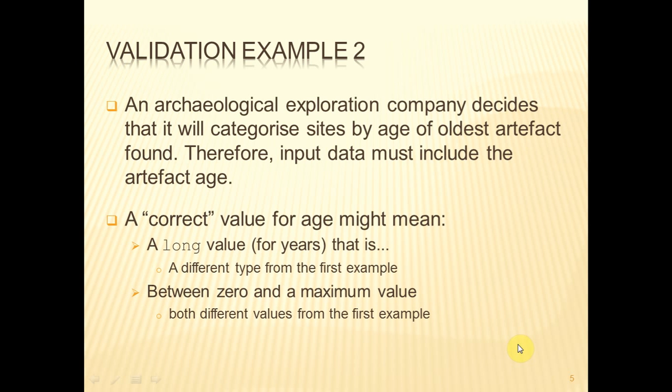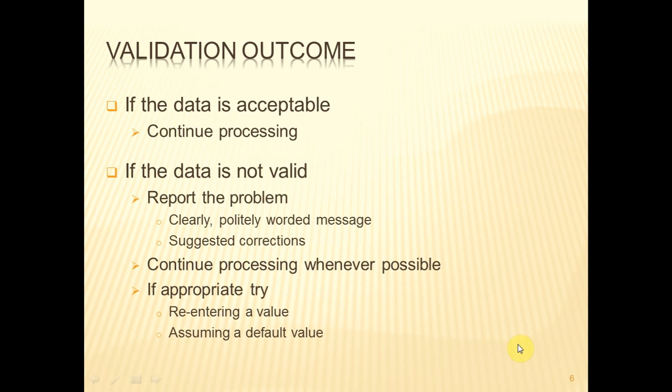When we're validating something, it depends on the context in which we're performing the validation as to the definition of correct. So you're going to have to work out — presumably by talking with your clients — what correct means. And then you perform the validation. When the data comes in, you check it to make sure that it falls within the accepted ranges that you've been given. If the data is acceptable, then of course you go on and process. But if it's not acceptable, if it doesn't fall within the validated range, then we have to report the problem.